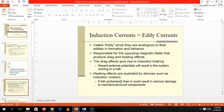So heating effects are exploited by devices such as induction cookers. If left unchecked, then it could result in serious damage to mechanical and circuit components. So basically, eddy currents oppose the motions in a particular object. Because these are also magnetic fields being generated. These are magnetic fields that produce drag and heating effects. So later on, I'll be showing you a video to demonstrate eddy current.